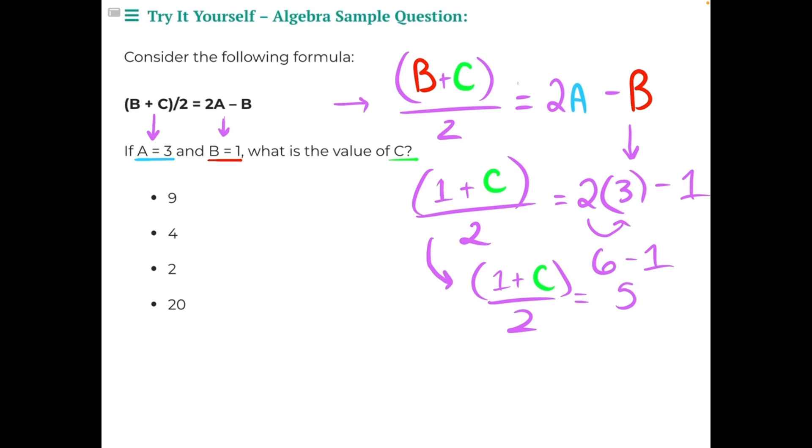Right now our variable is being divided by 2, so we need to perform the opposite of division, multiplication, to both sides of the equal sign in order to start to isolate our variable. So 2 is in the denominator. Let's multiply by a fraction that has a numerator of 2, so that these 2s will cancel each other out.